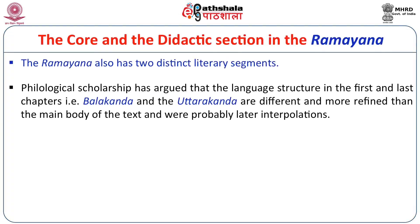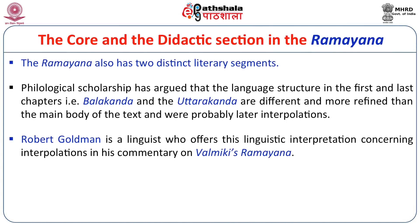Ramayana also follows the same pattern. It is much lesser in size compared to Mahabharata, but it too has later additions. Books 2 to 6 were written at an earlier time, while Book 1 (Balakanda) and Book 7 (Uttarakanda) were added much later. We also find Professor Robert Goldman, a linguist, who offered a linguistic interpretation discussing incongruences in the writing of Valmiki's Ramayana — the language structure and literary style of the later sections being quite advanced compared to earlier sections.